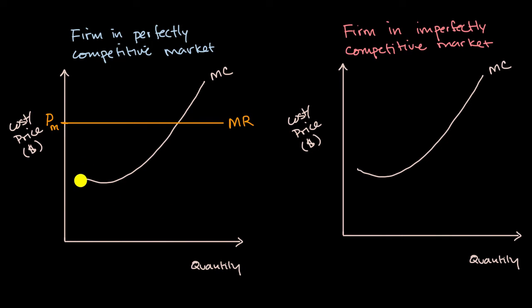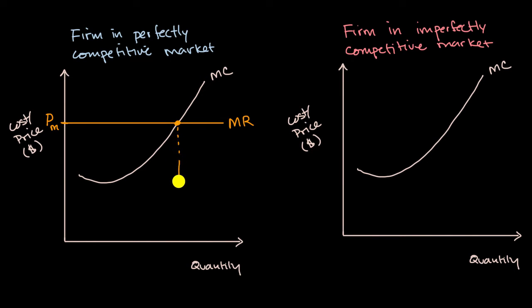If this firm was trying to maximize its profit and was rational, it would produce the quantity where marginal cost is equal to marginal revenue. So it would produce this quantity right over here.